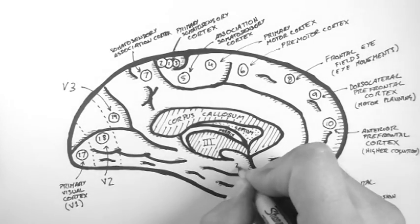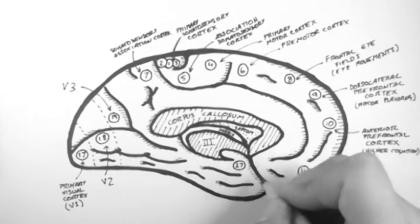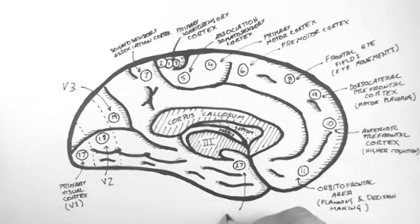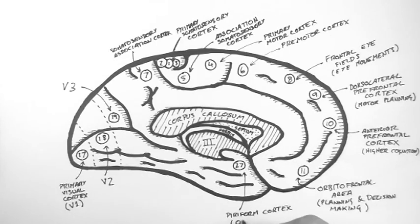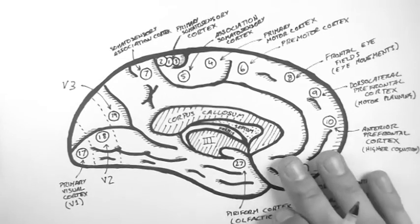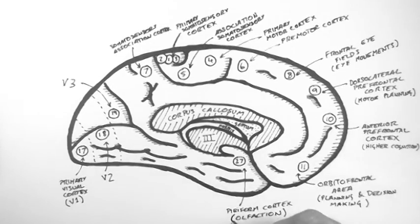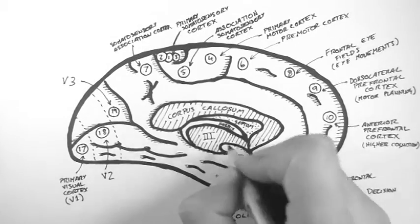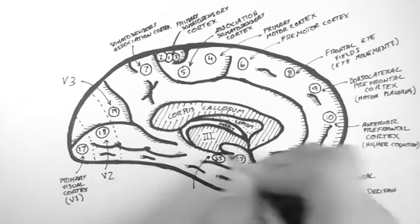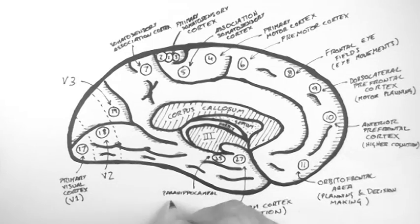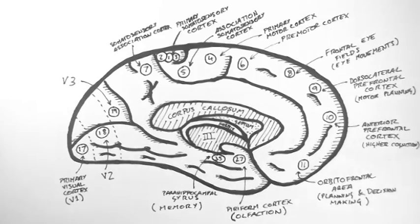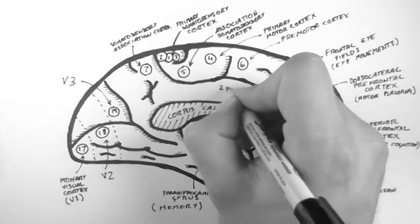Down here just below the uncus is the piriform cortex. And this plays a role in olfaction, or the sense of smell. And behind that is the parahippocampal gyrus. And that's believed to be involved in memory.